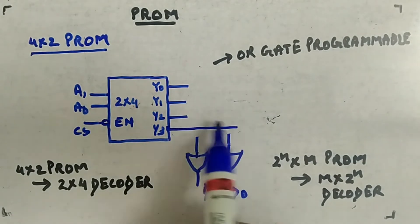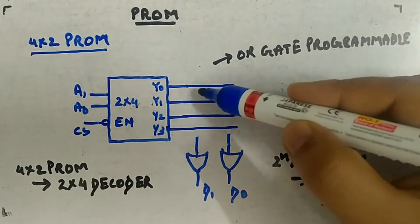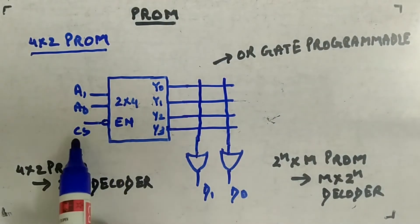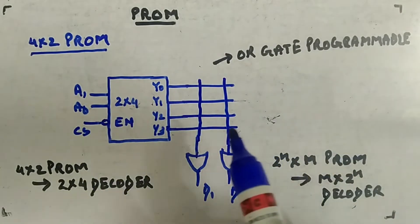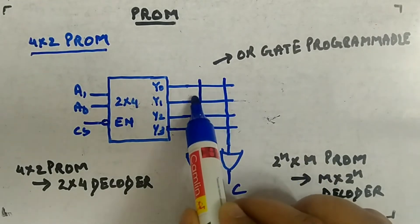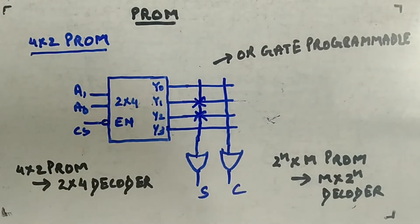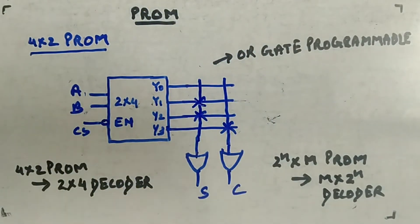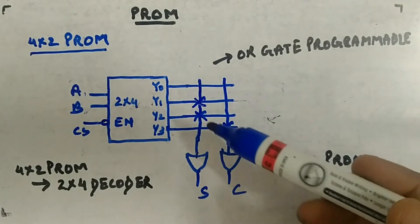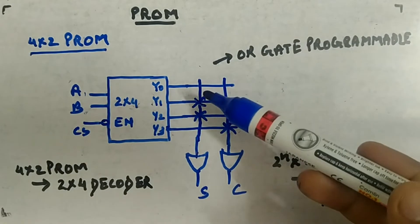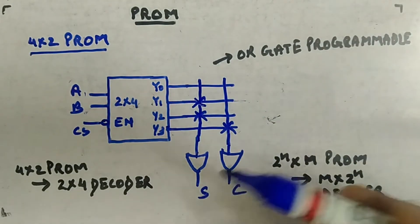For the half adder using PROM, the decoder generates the 4 minterms and has an enable pin - you provide 0 to enable it. For Sum S, you cross at positions 1 and 2 (pattern 0110), and for Carry C, you cross at position 3 only (pattern 0001). This is how you implement a half adder using PROM. It requires a decoder to generate the minterms, and whichever minterms you want in your function, you cross them and get your required function.